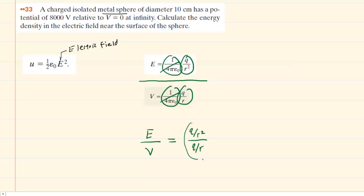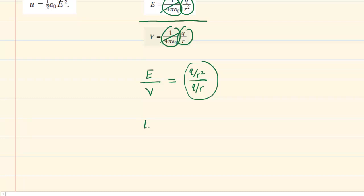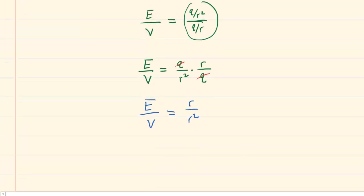To simplify this complex fraction we use the principle of keep-change-flip: keep the first fraction q over r squared, change division to multiplication, and flip the other fraction to r over q. The q's cancel out so now we have electric field over electric potential equals r divided by r squared. We can simplify the right side by canceling a factor of r, so this becomes 1 over r.